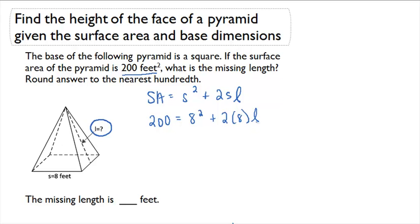If I solve this equation for L, I would figure out what the slant height is. So 200 equals 64 plus 16 times L. If I subtract 64 on both sides, I get 136 equals 16L.